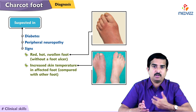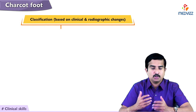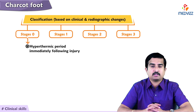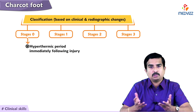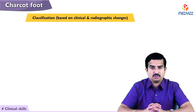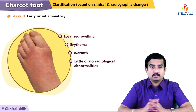The classification of Charcot neuropathy is based on clinical and radiographic changes, differentiating three traditional stages plus a fourth stage called Stage 0. Stage 0, the early or inflammatory stage, is defined as a hyperthermic period immediately following injury with edema and erythema of the foot and ankle but no radiographic changes yet visible.